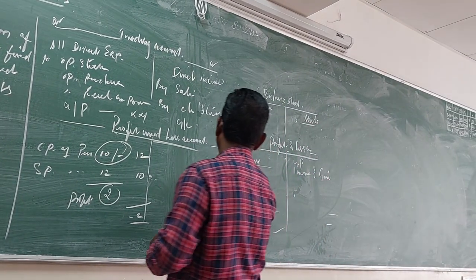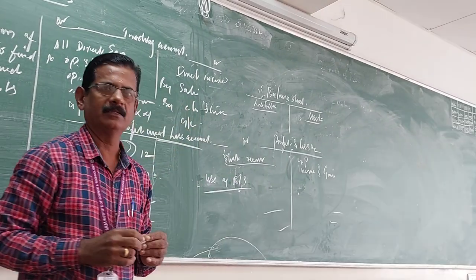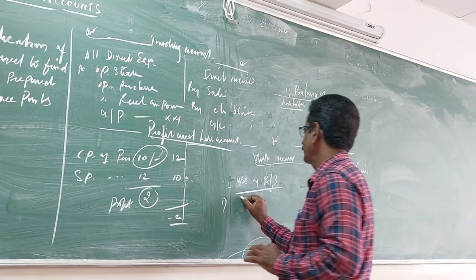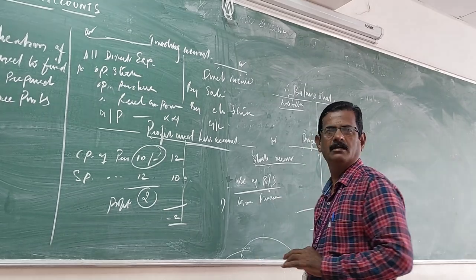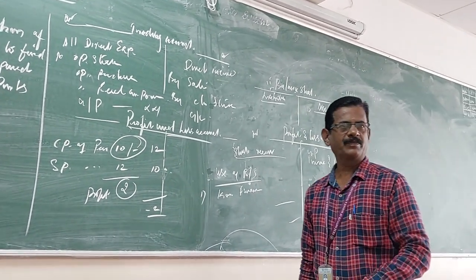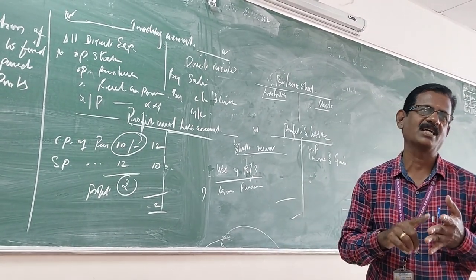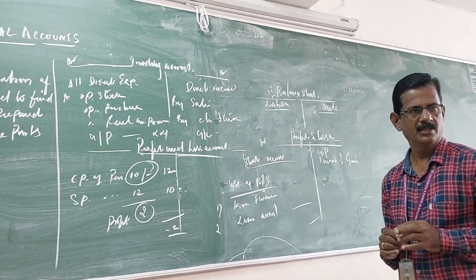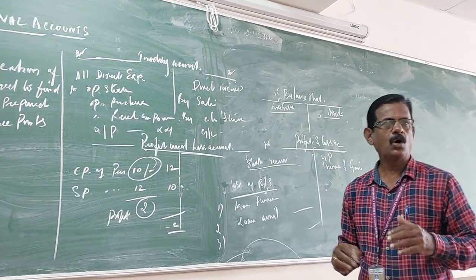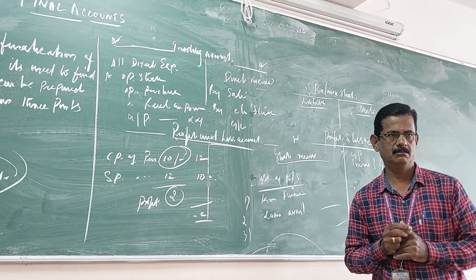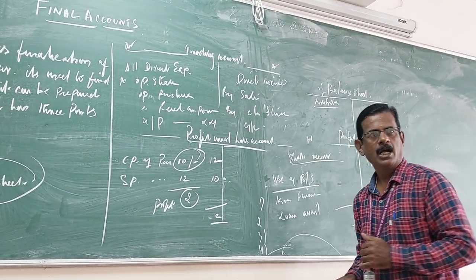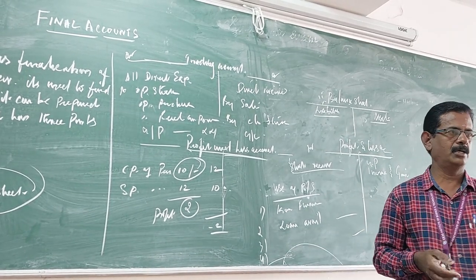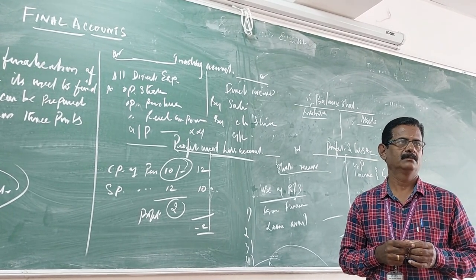What are the uses of balance sheet? First one is to know the financial position of the concern. Next one is to take financial decisions. Third, to identify debtors and creditors of that business concern. Fourth is the goodwill of that concern. Any idea, any doubt please ask me? No more. Okay, thank you.